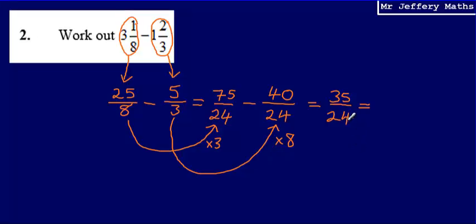So I'm now going to convert 35 over 24 back into a mixed number. So how many 24s fit into 35? That is 1 with a remainder of 11 over 24.